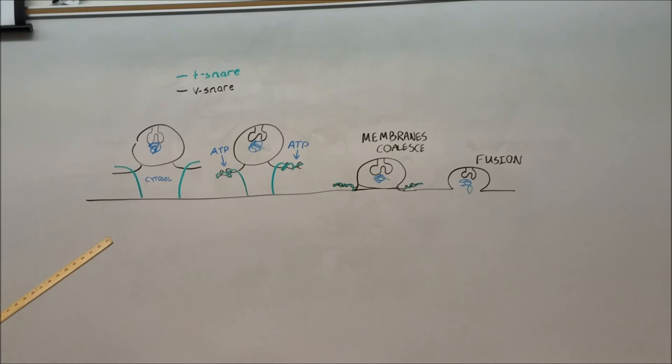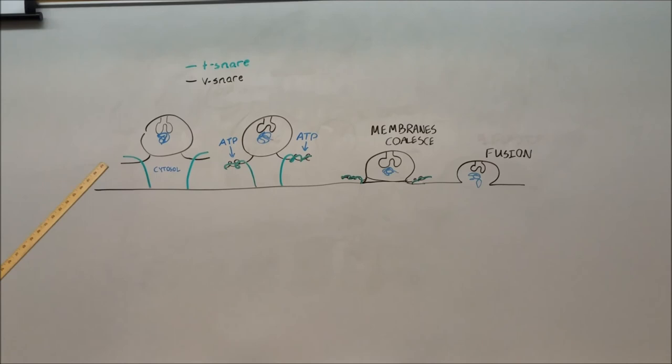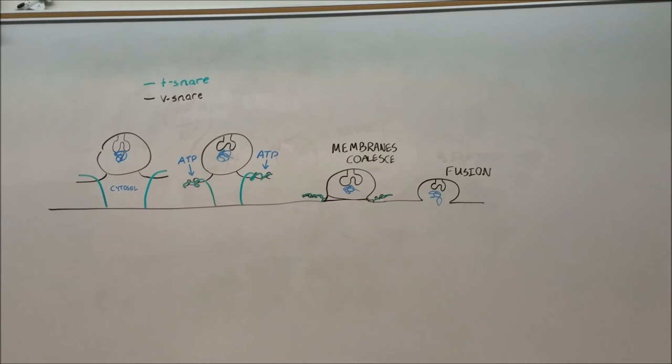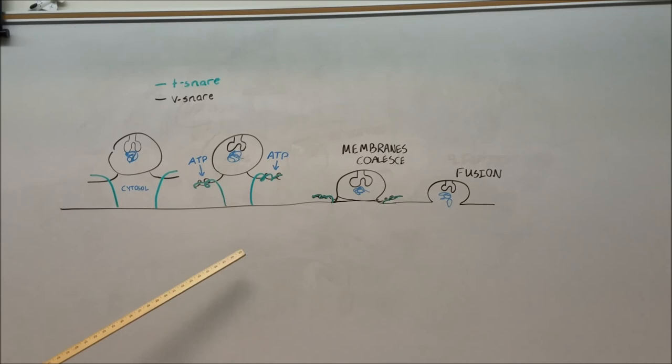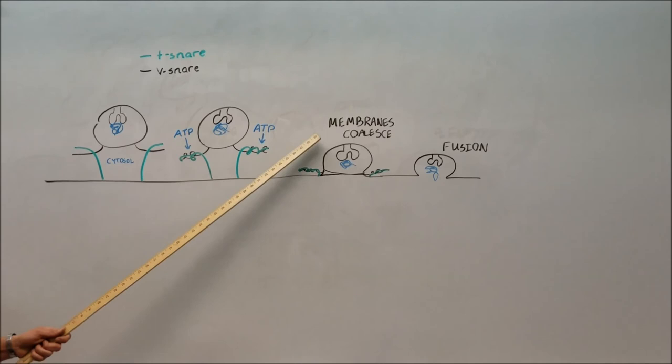Through the process of docking, the T-snares and the V-snares begin their interaction. Since there is cytosol between the vesicle and the target membrane, all of it needs to be removed in order for the membranes to fuse together. Therefore, a large amount of ATP is used so that the V-snare and the T-snare begin to twist around each other, which forces the vesicle and the target membrane to come together until they coalesce, which is when they are touching.